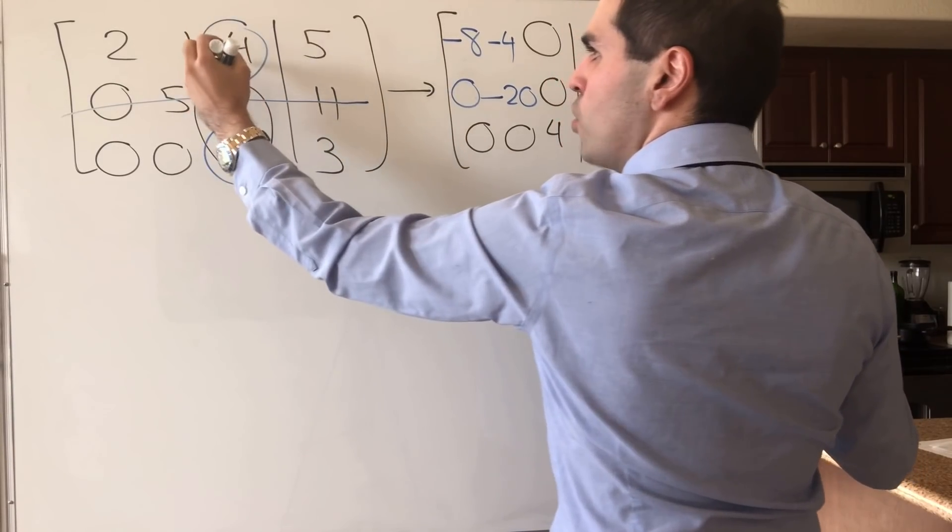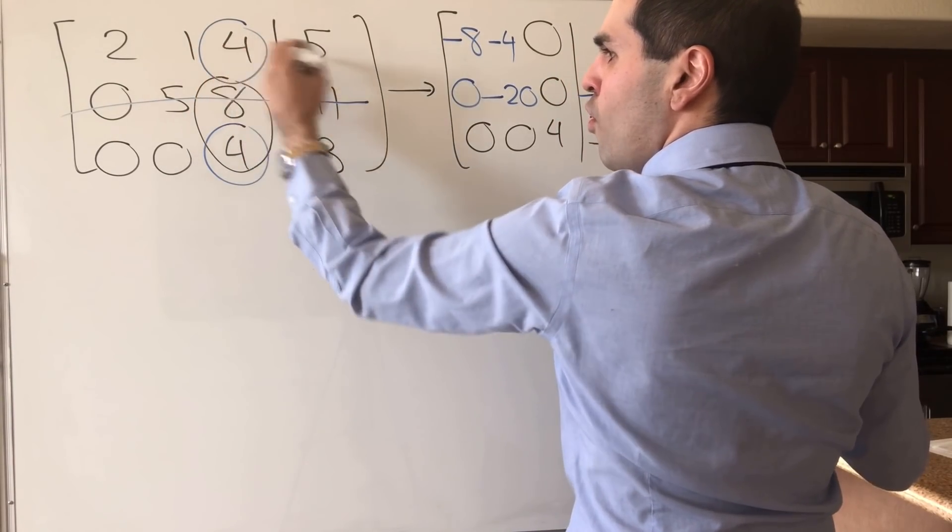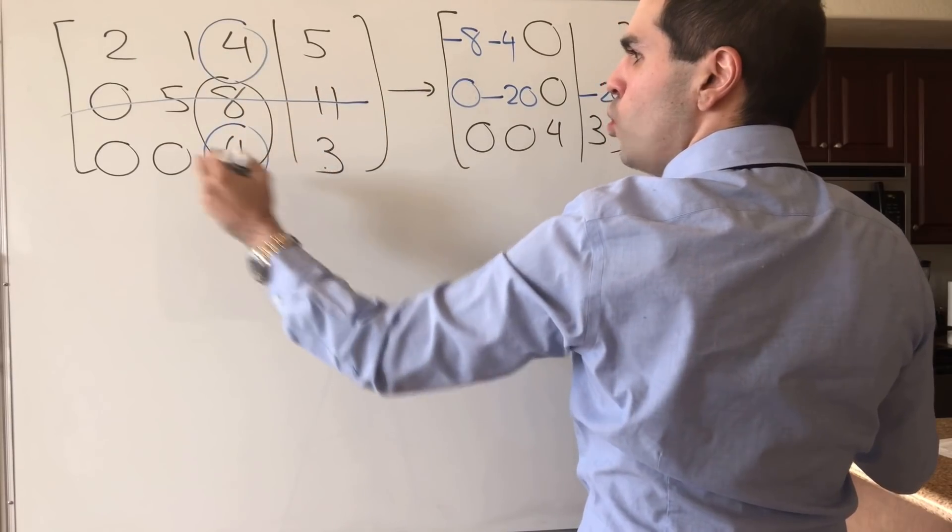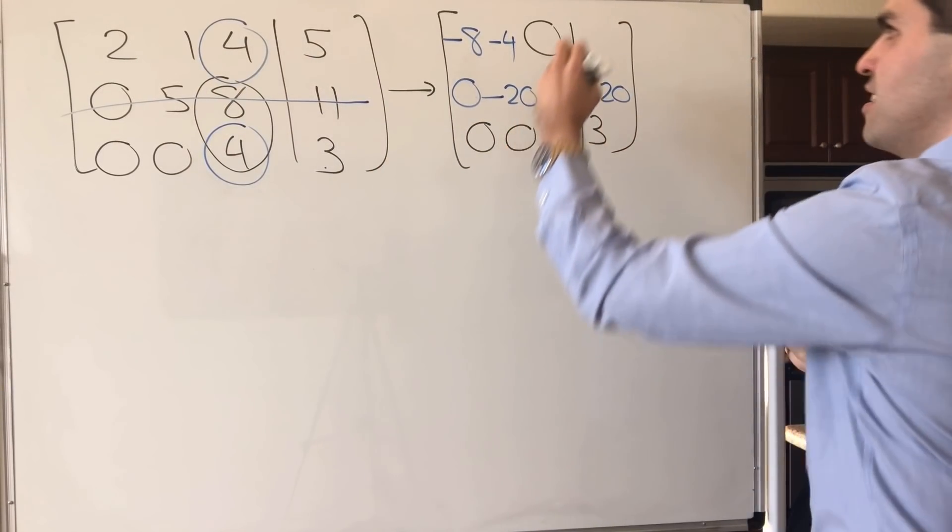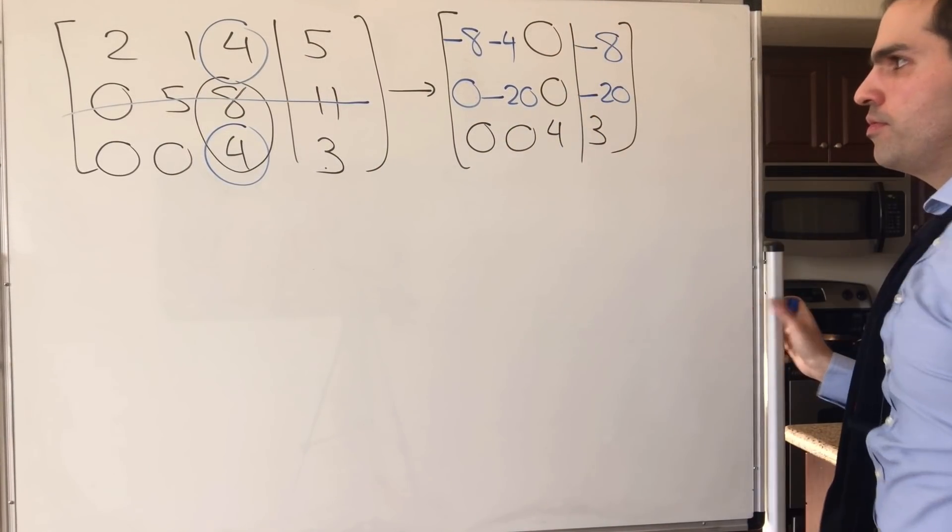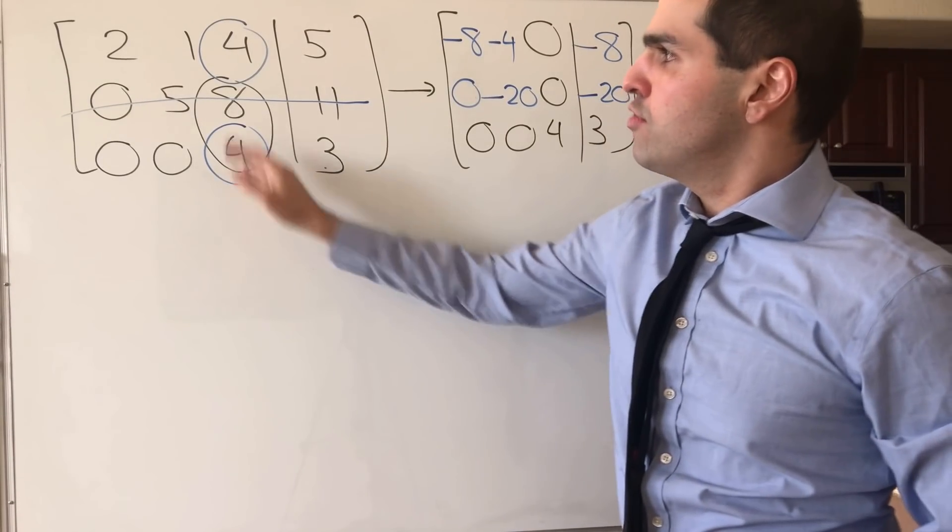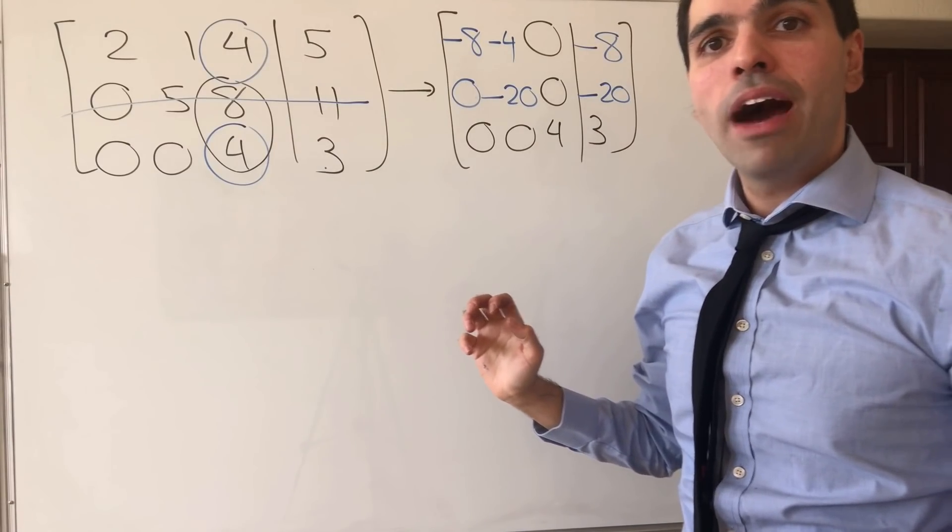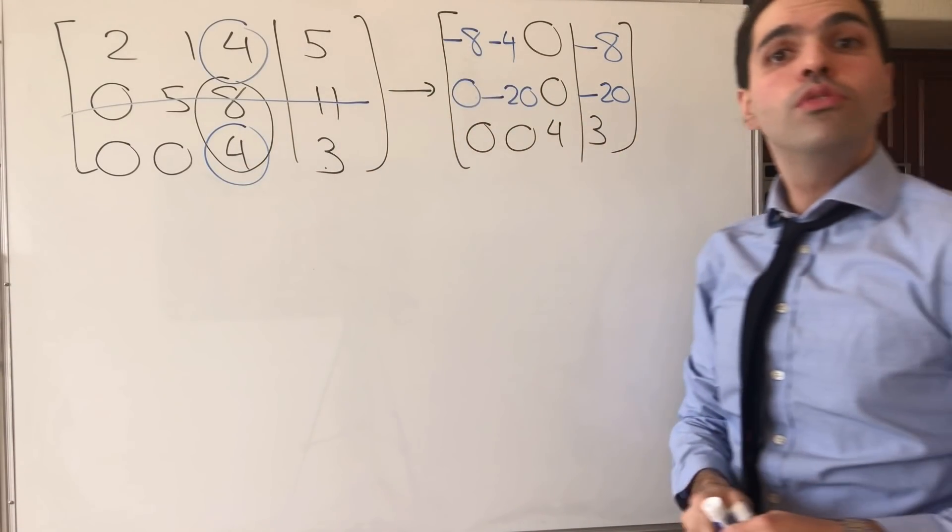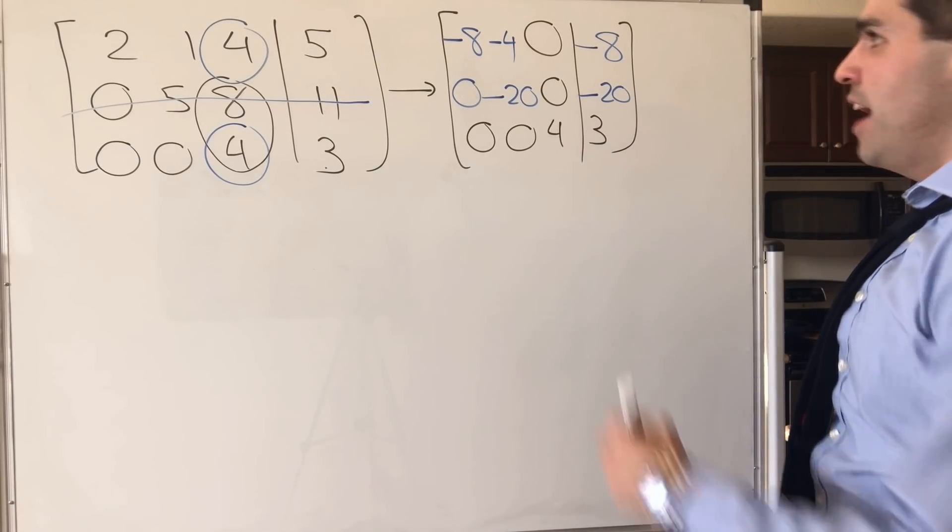And then, you take the determinant of 4, 5, 4, 3. So 12 minus 20, and that's minus 8. So again, just to repeat, for this 4, you multiply everything by minus 4 and everything to the right. You do the usual determinant trick. And of course,